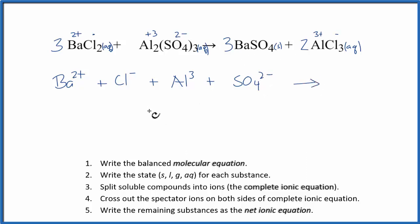Those will react and we'll end up with the barium sulfate, and that stays together since it's the solid, plus we have the aluminum, the Al³⁺, plus the Cl⁻. So we have a complete ionic equation.